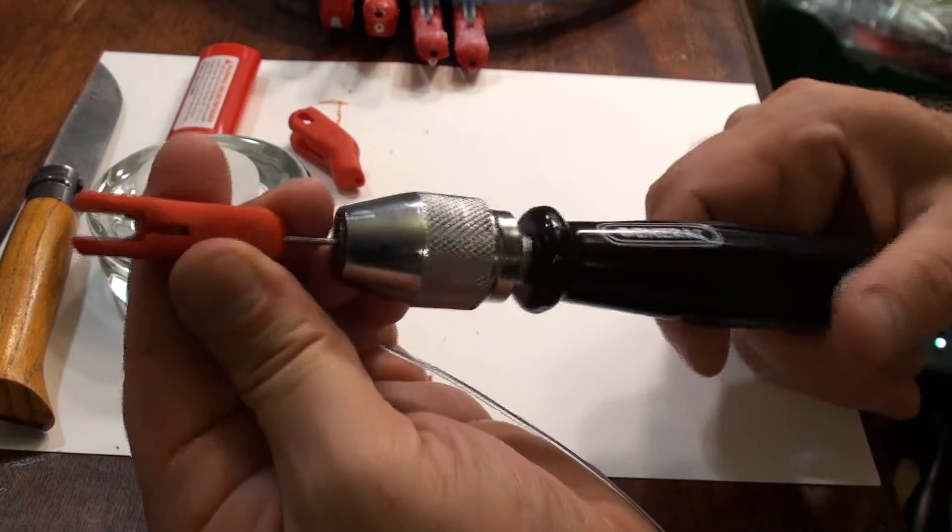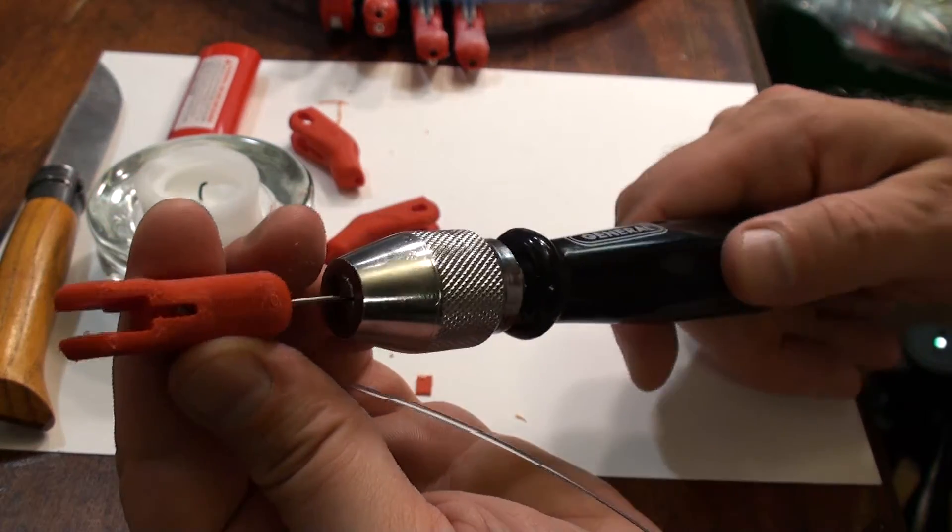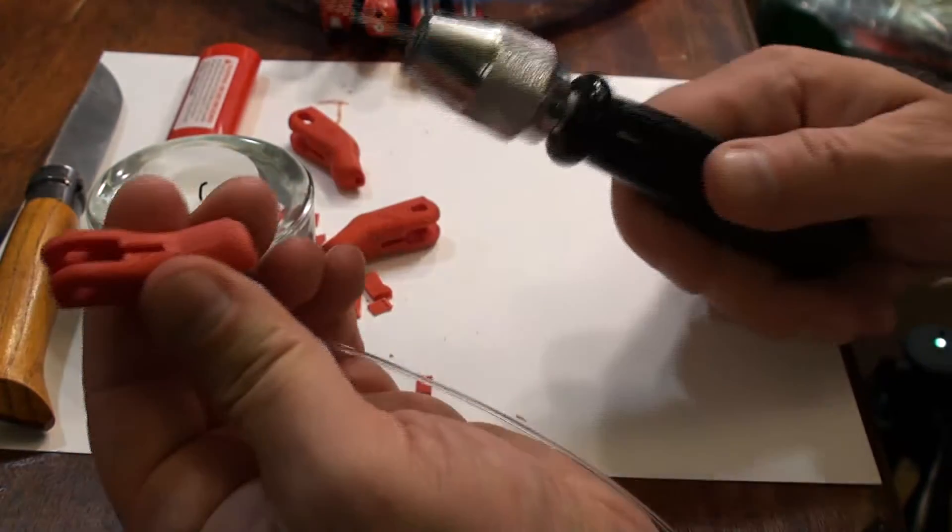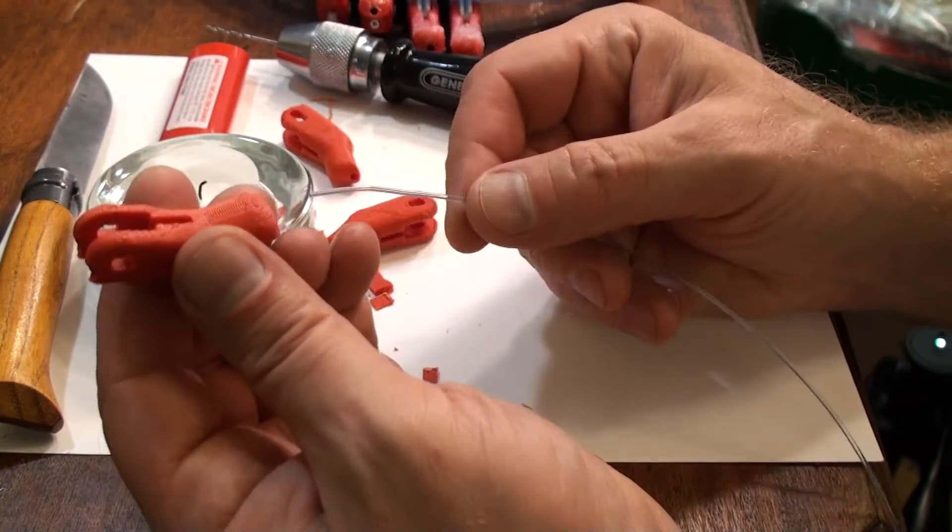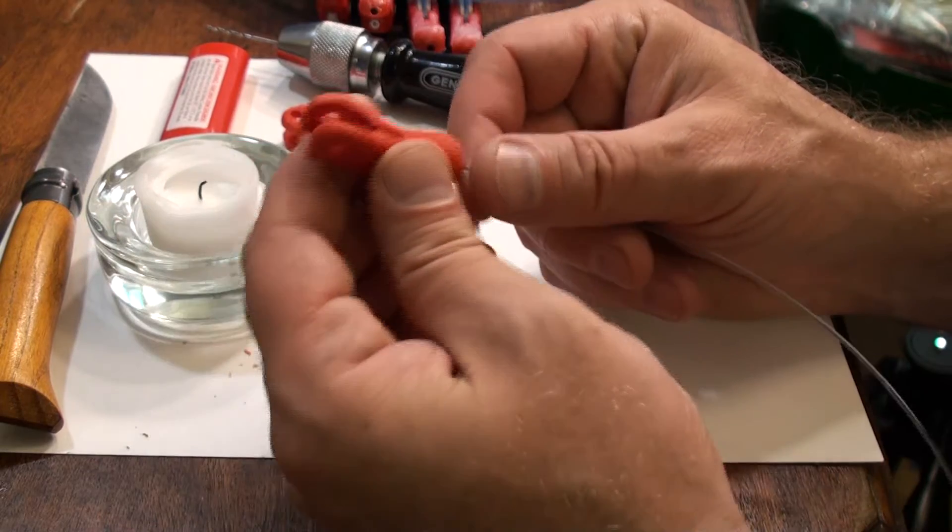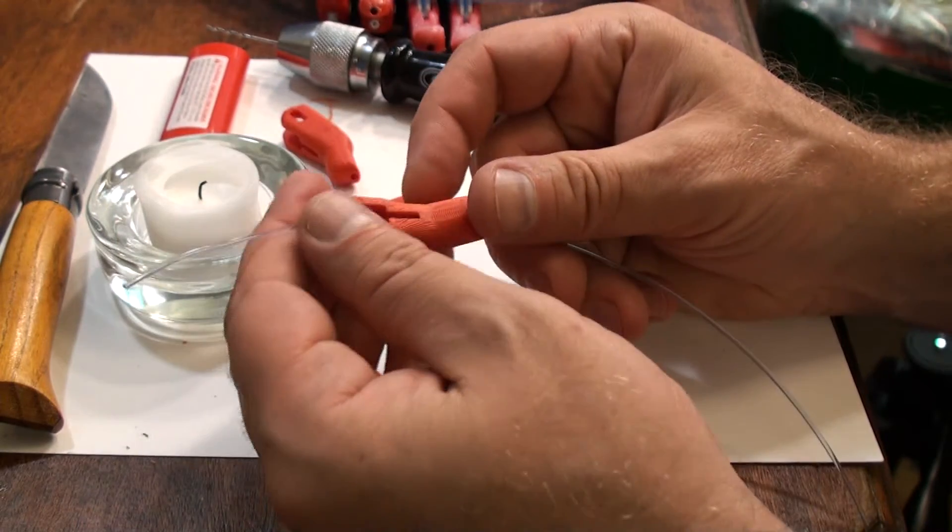So when you see a little drill bit peeking out from inside there, I don't know if you can see that. Then the hole's done and ready, and this will now insert nicely through here.